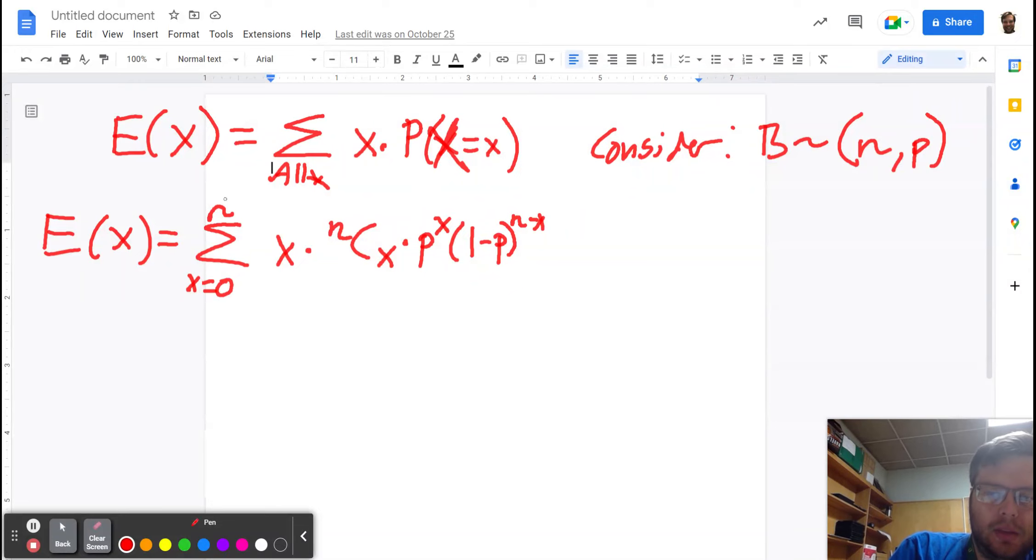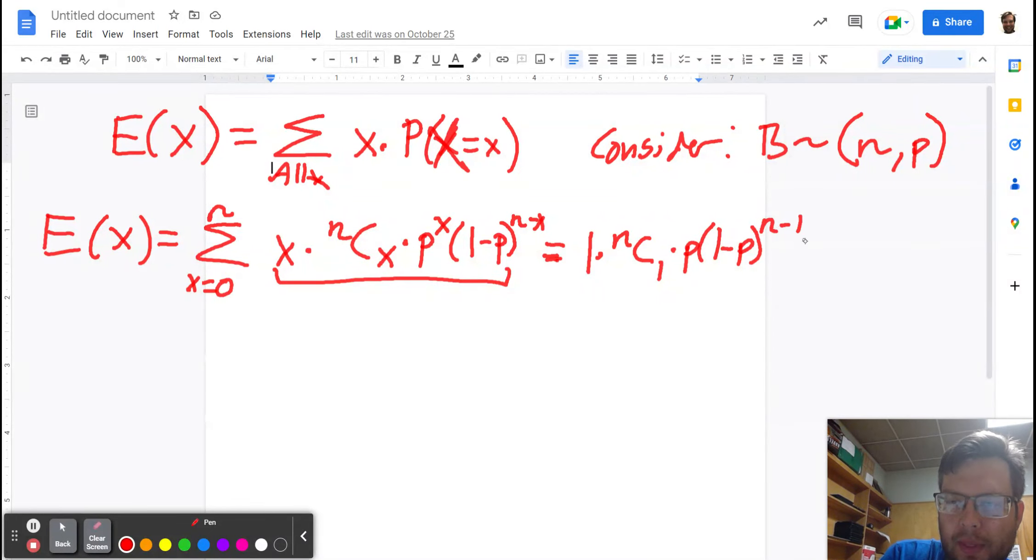So let's start writing out what a couple of the terms look like and see if we notice anything about them. So the first term is when x is equal to zero. Well, if x is equal to zero, all of this is just going to equal zero because you plugged in zero. So let's try to go to the next term when x is equal to one. So when x is equal to one, we have one times n choose one times p times one minus p to the n minus one. Then we have when x is equal to two. And remember, we're adding all these up. Two times n choose two times p to the second power times one minus p to the n minus two.